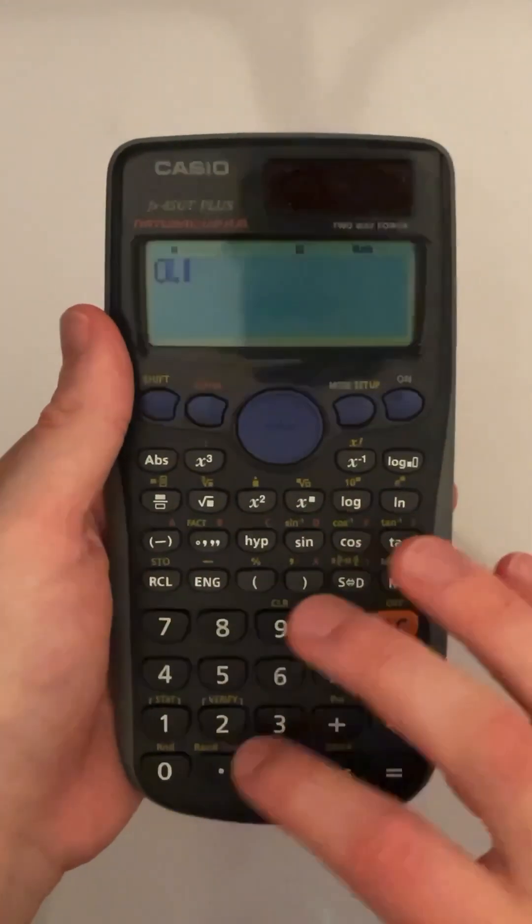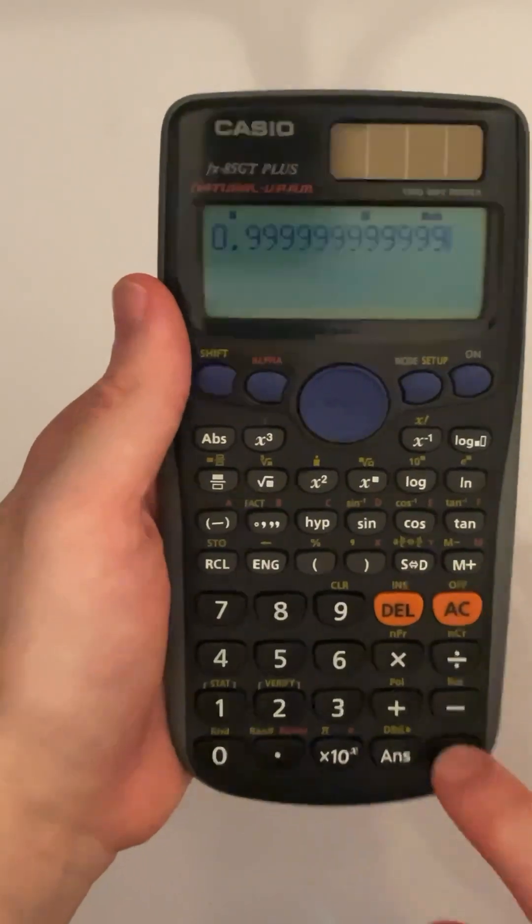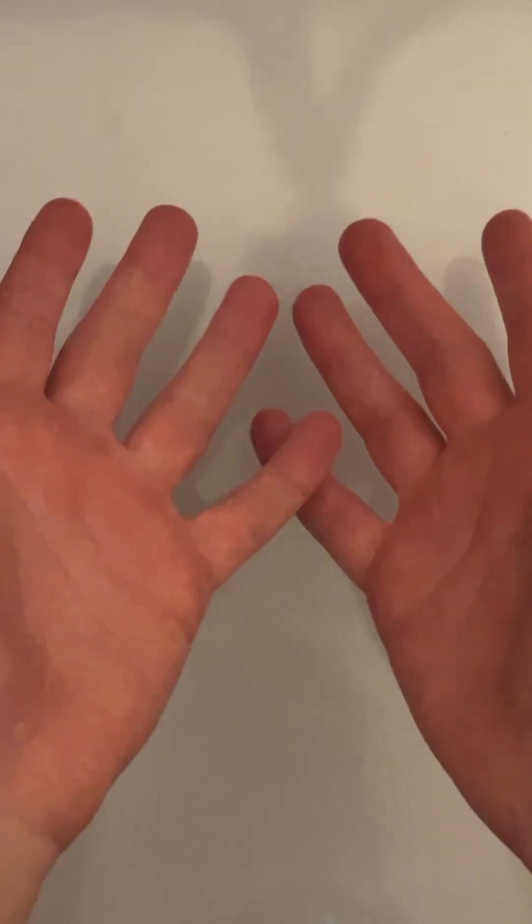If we take a calculator and enter the numbers 0.999 recurring and press equals, we get the value 1. This is simply not true. Or is it?